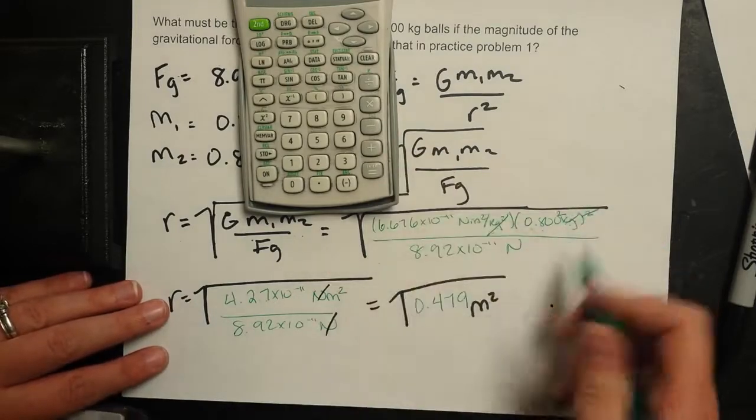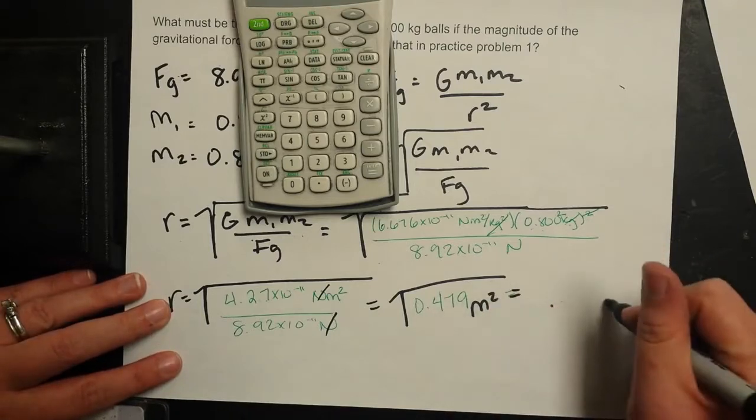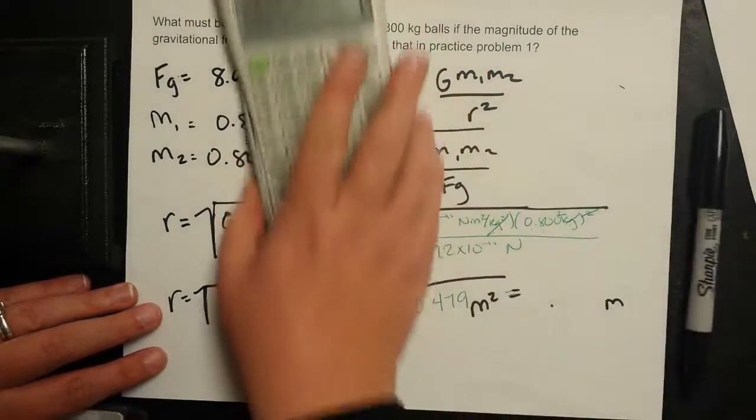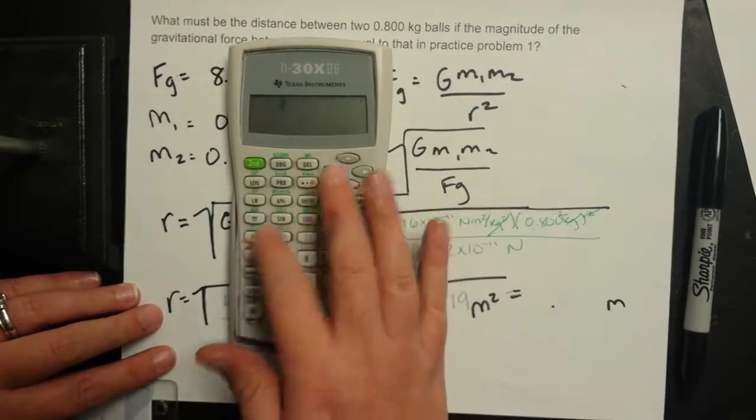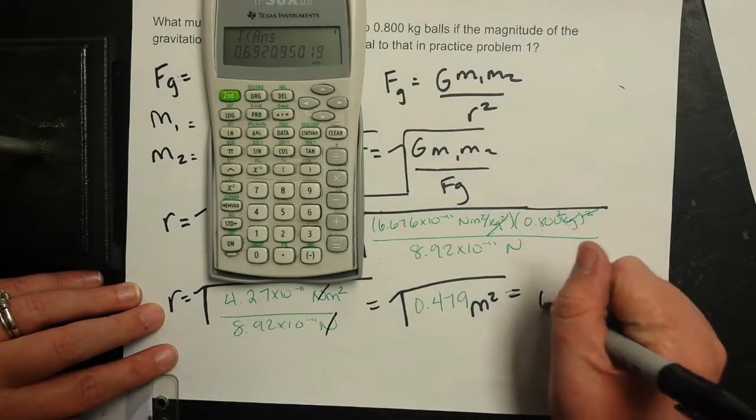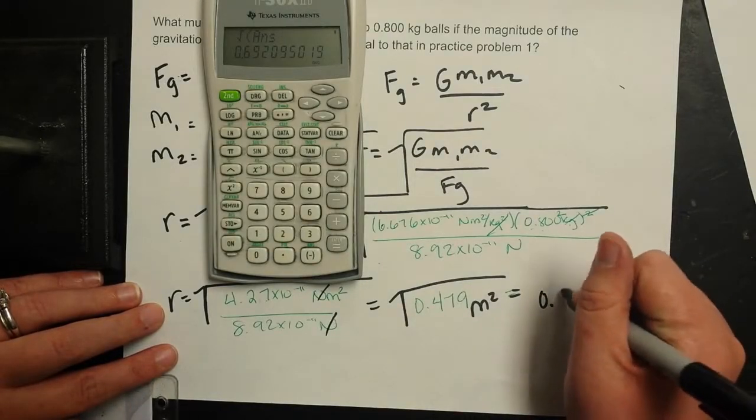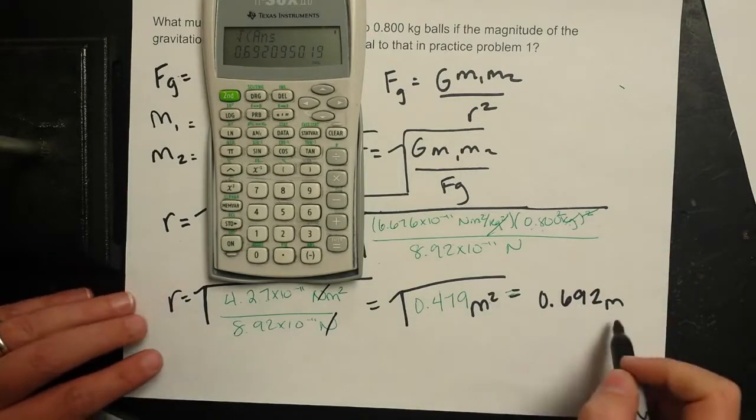Take the square root. The square root of meters squared is meters. The square root of about a half. Let's go ahead and plug this in. So square root of that answer would be 0.692 meters or about 0.7 meters.